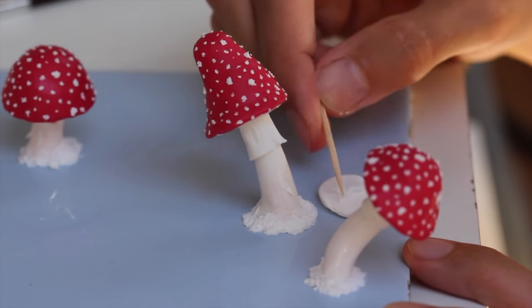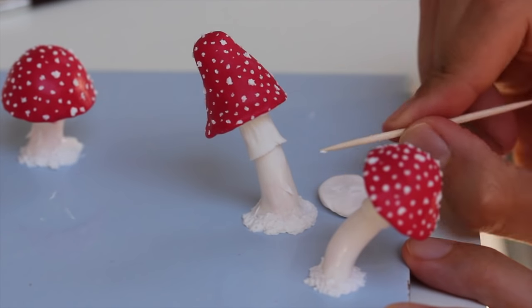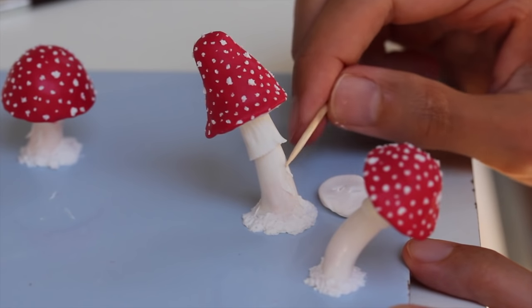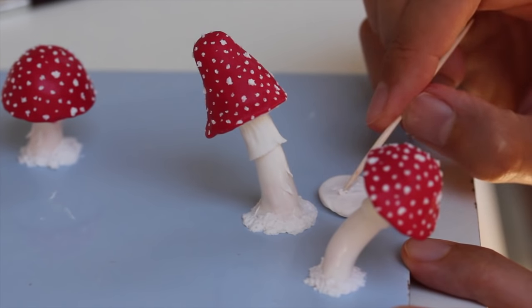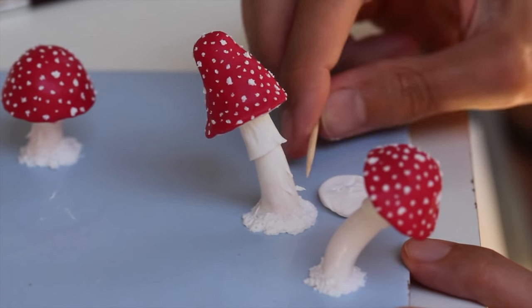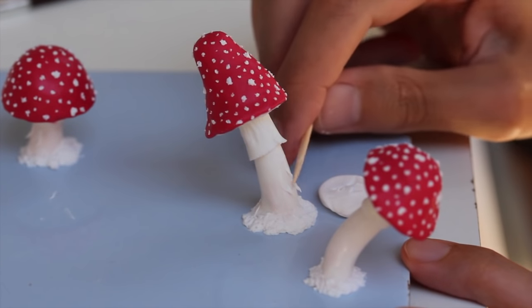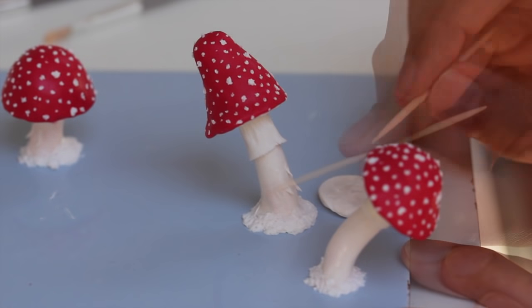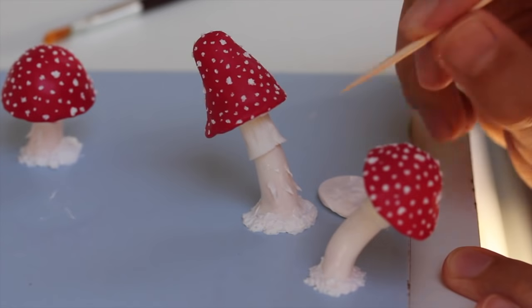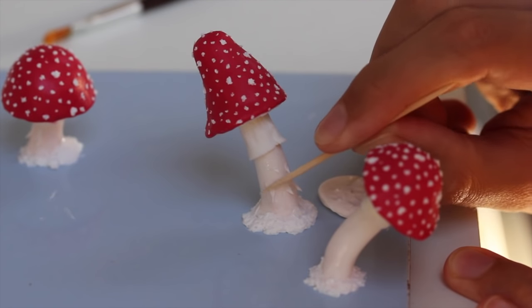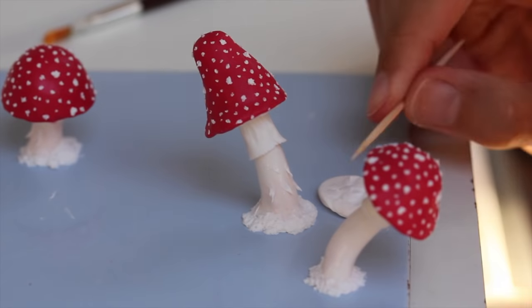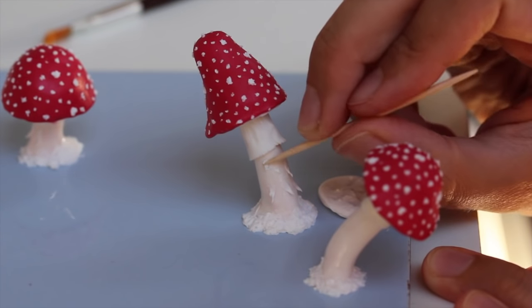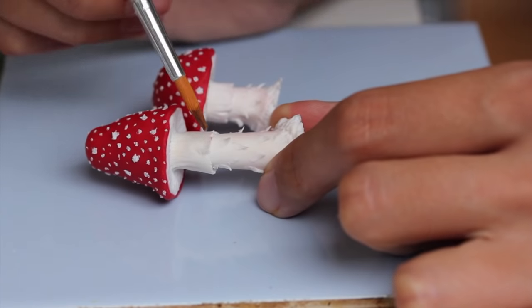You can add some more details and texture on the stem by simply adding some bits of clay on it. This is something we could have done before baking the stem, but I decided to just add some more details after. And just go on and add as much as you wish. Once you're happy with all your mushrooms, bake again.